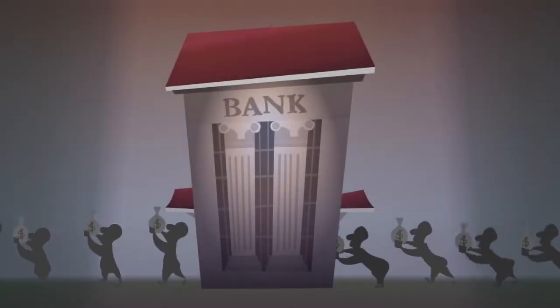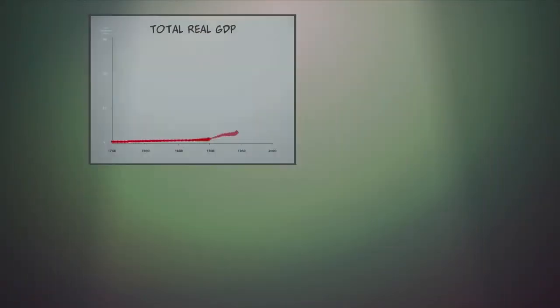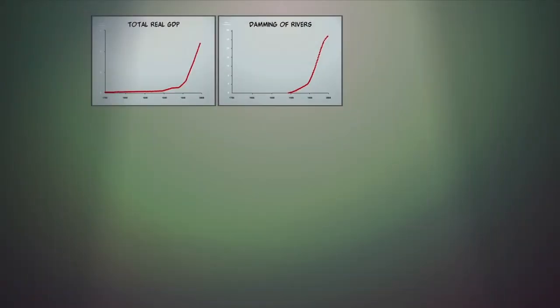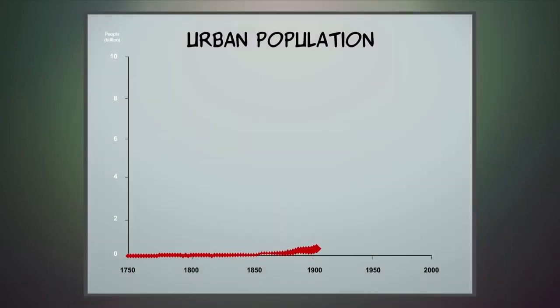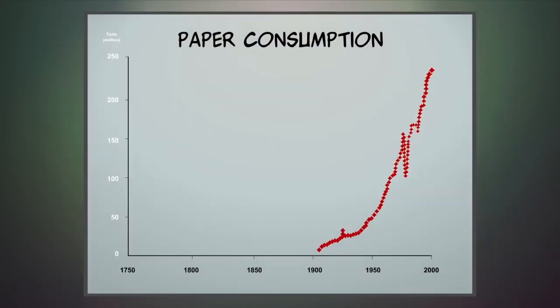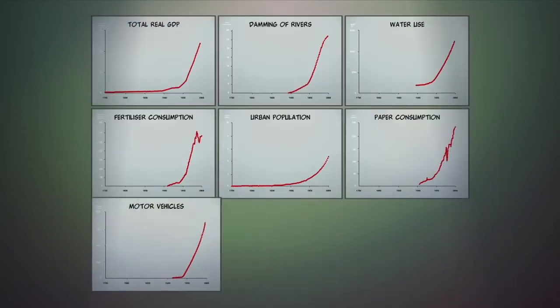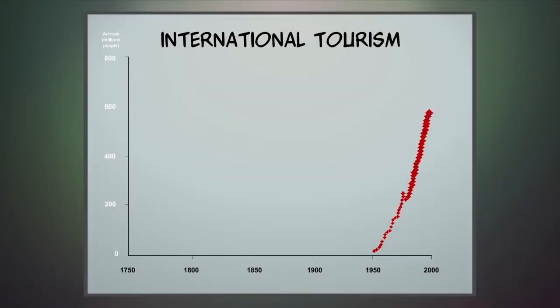Partly through this debt system, the effects of economic growth have been spectacular, in GDP, damming of rivers, water use, fertilizer consumption, urban population, paper consumption, motor vehicles, communications and tourism.